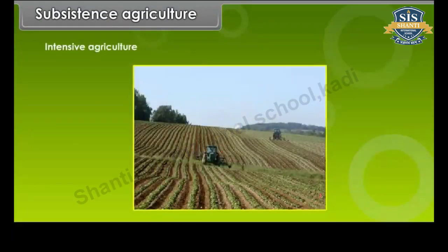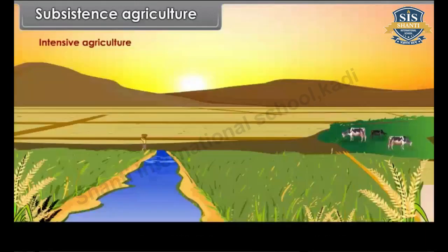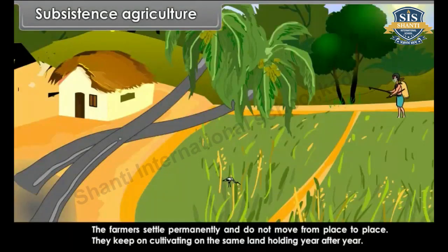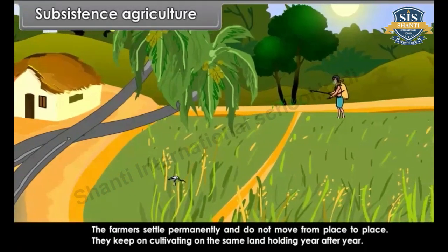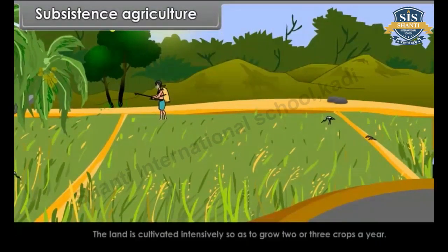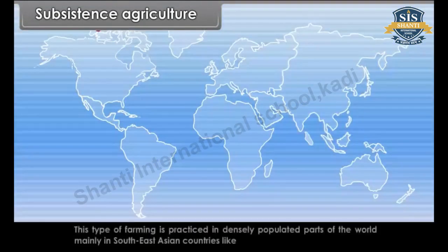Intensive agriculture is done on a permanent basis on a particular piece of land. The size of the farm is usually small. The use of animals and manual labor is maximum. The farmers settle permanently and do not move from place to place. They keep on cultivating on the same land holding year after year.